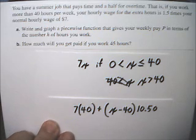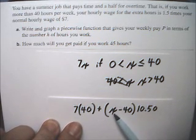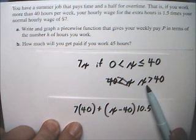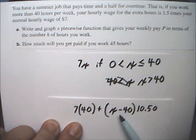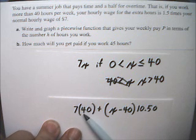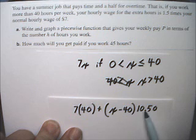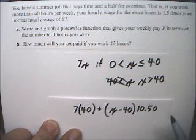This should make sense: if you're dealing with an X that's greater than 40, say it was 45, then 45 minus 40 would be 5 — those are your 5 hours of overtime. Here's your $280 for regular time, plus your 5 hours of overtime, which would be $52.50.